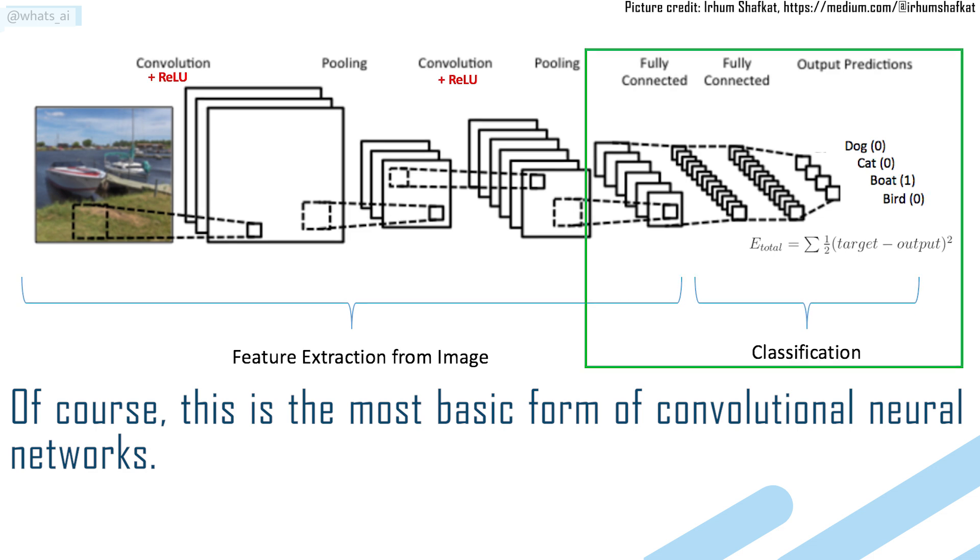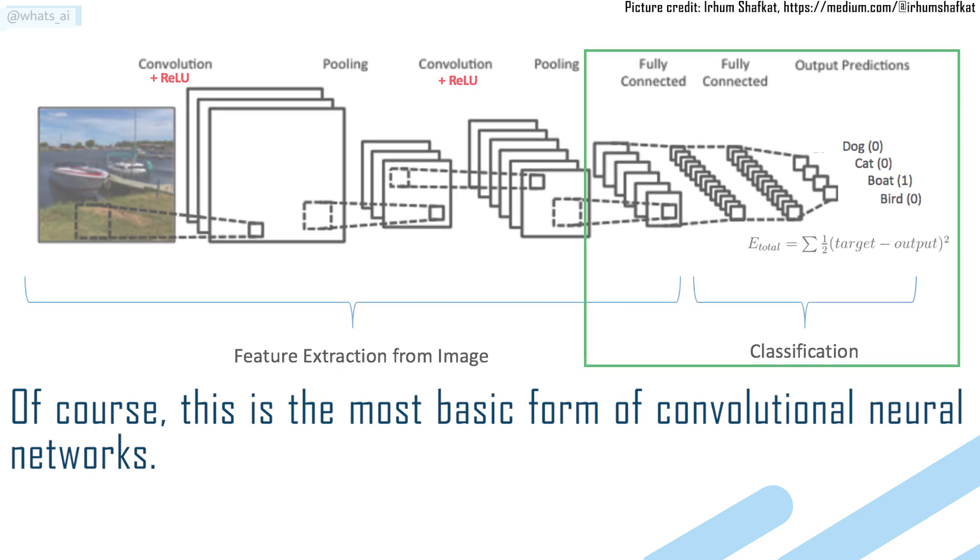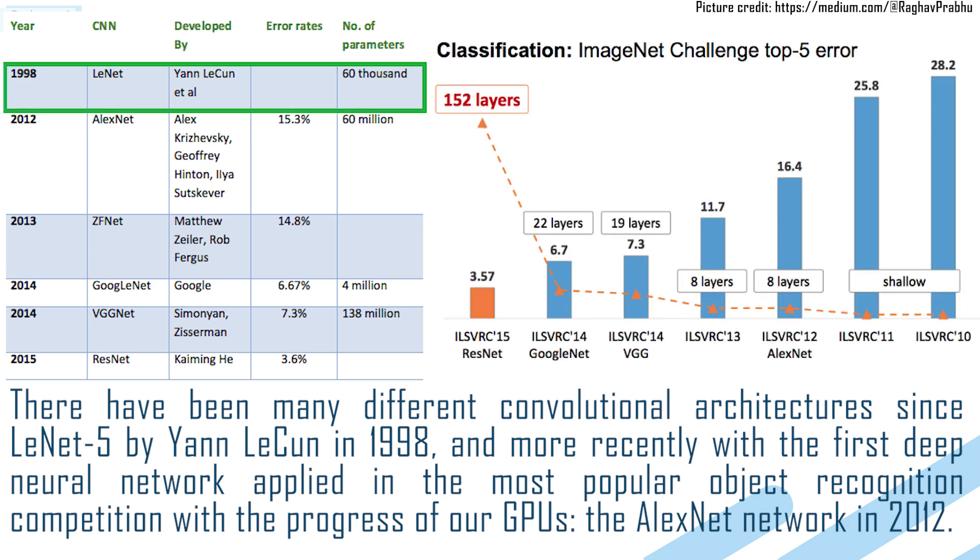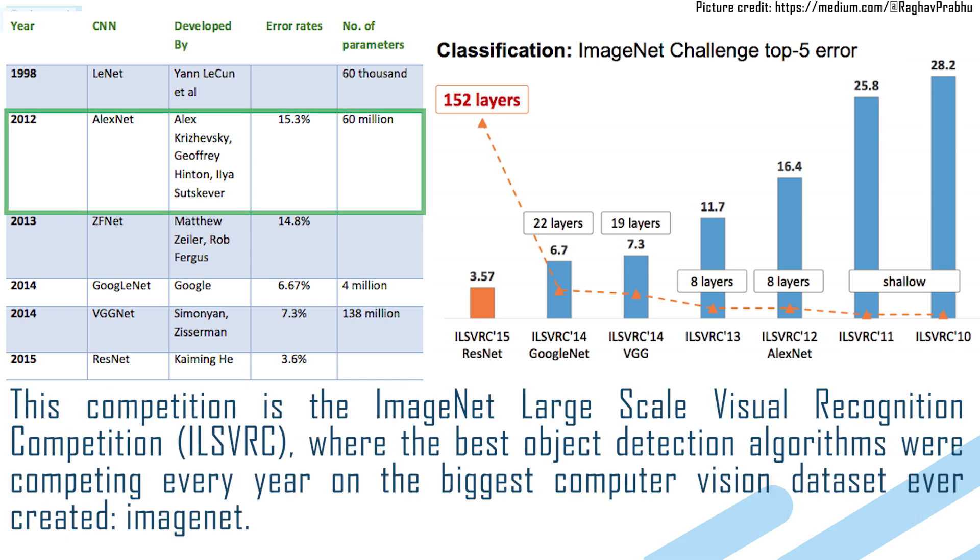Of course, this is the most basic form of convolutional neural networks. There have been many different convolutional architectures since LeNet-5 by Yann LeCun in 1998, and more recently with the first deep learning network applied in the most popular object recognition competition with the progress of the GPUs, the AlexNet network in 2012. This competition is the ImageNet large-scale visual recognition competition, ILSVRC, where the best object detection algorithms were competing every year on the biggest computer vision dataset ever created, ImageNet.